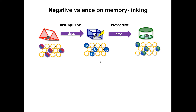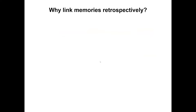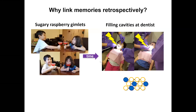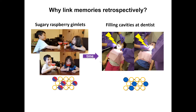To give intuition for why we want to link memories retrospectively: I took my kids to the dentist, an aversive experience — they both needed cavities filled. An aversive experience gets encoded in a sparse population across the brain. It would behoove my children to think back in time — why do we have so many cavities? — and link back to when their dad made them sugary raspberry gimlets. The past predicts the future: if they can link these experiences, they can make better decisions.